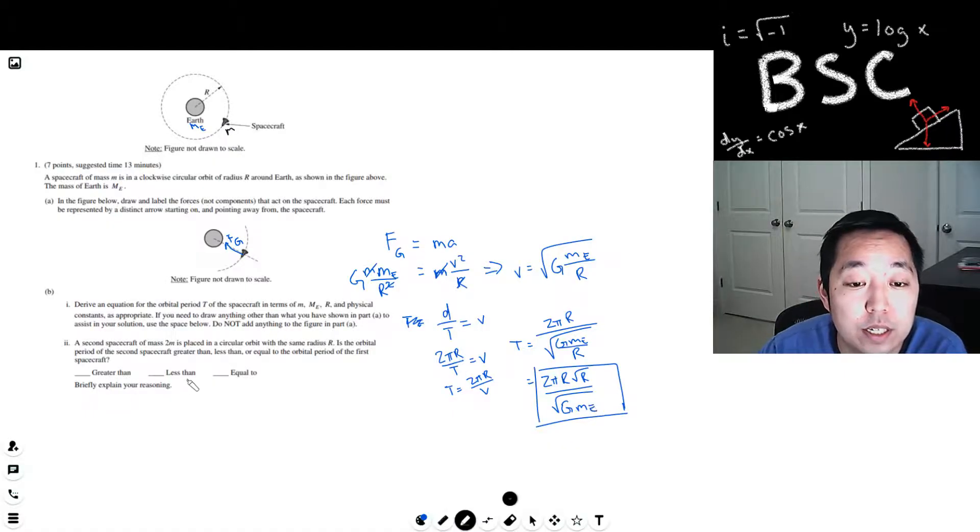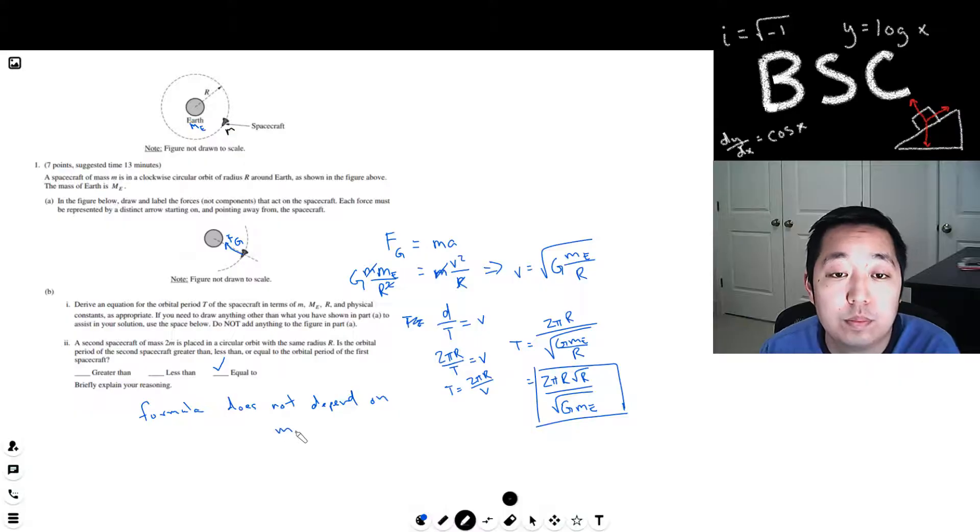So the period is equal to... Yeah, it's the same radius R, it's 2M. And for my reasoning, the formula does not depend on M.